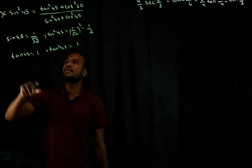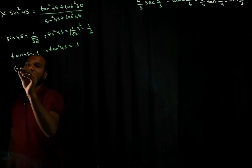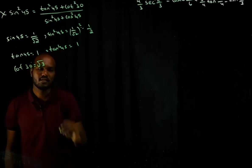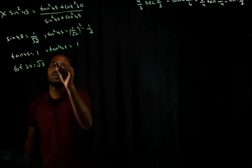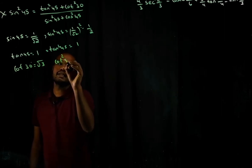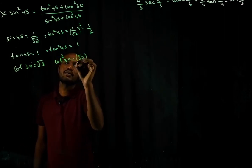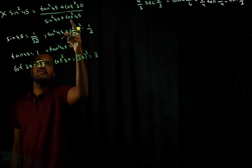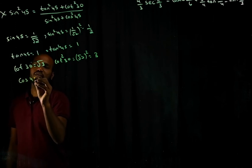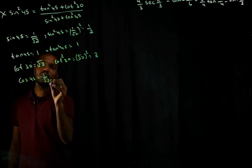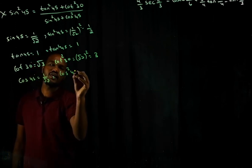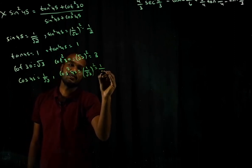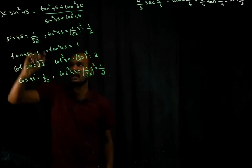Next, cot 30° is √3, so cot²30 is (√3)² = 3. And cos 45° is 1/√2, so cos²45 = (1/√2)² = 1/2.